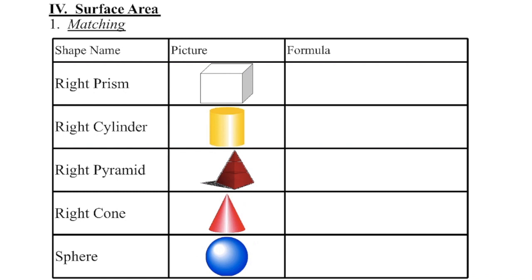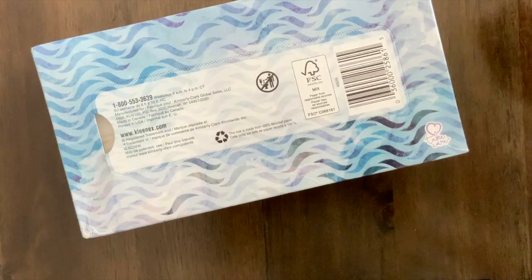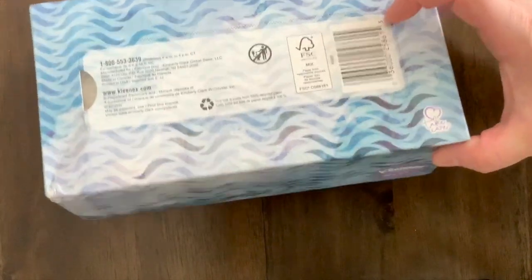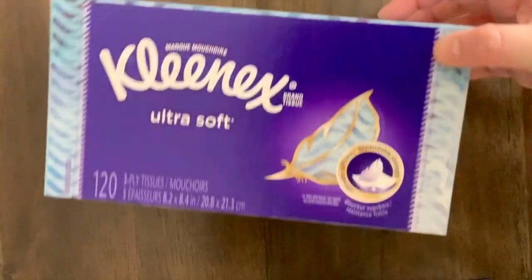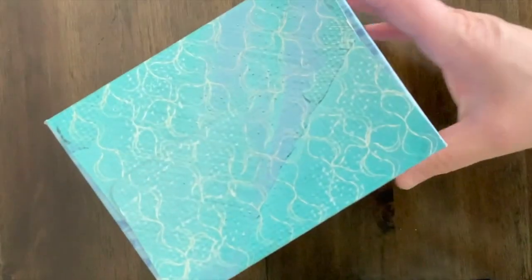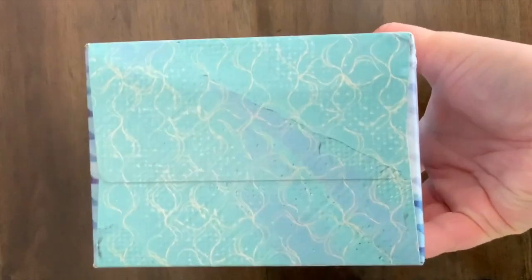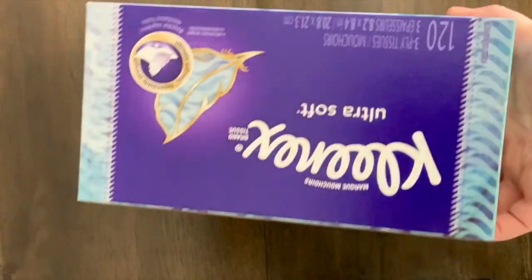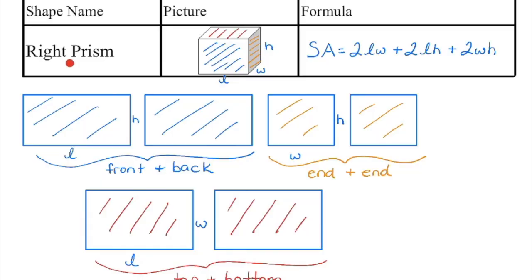Surface area is the total area of all surfaces or faces of a three-dimensional object. A right prism is like a Kleenex box where you can see we have six faces in total, all are rectangular. We can see that those two ends are the same area, the top and the bottom are the same area, as well as the sides. A prism has sides that are rectangular.